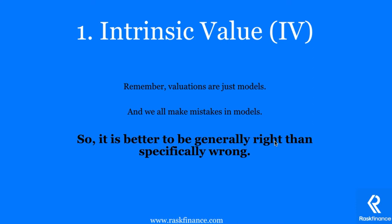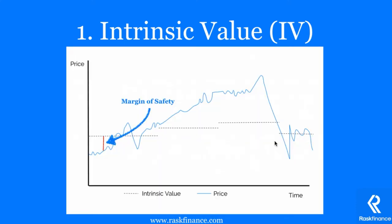It's important to think about intrinsic value as being generally right rather than specifically right — or as I put it, it is better to be generally right than specifically wrong. That will give you some comfort around the price moving away from intrinsic value. One way we can adjust for the difference between price and value, and for us potentially being wrong, is a concept called the margin of safety, also called the margin of error. This is the difference between our calculated value and market price — you can see it here with the red line. It's also known as the margin for error because it adjusts for us making a mistake in our research and/or our valuation.